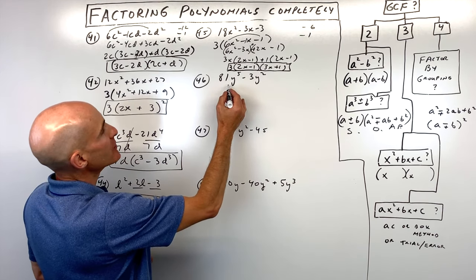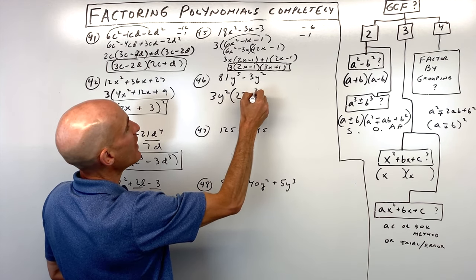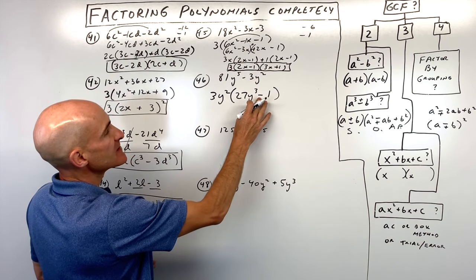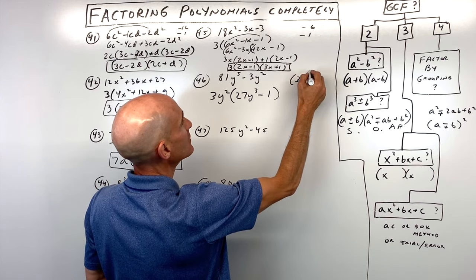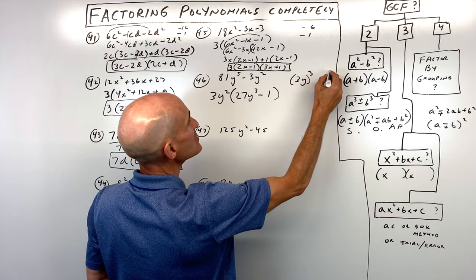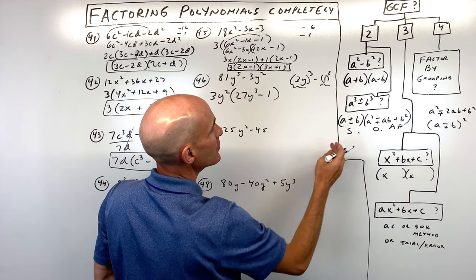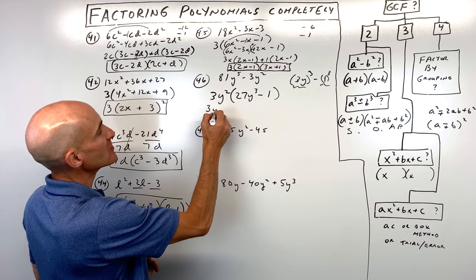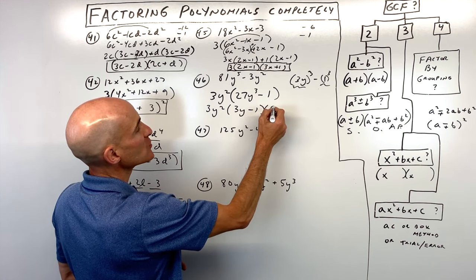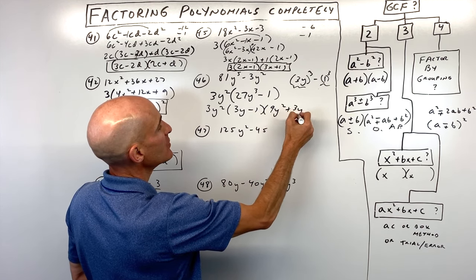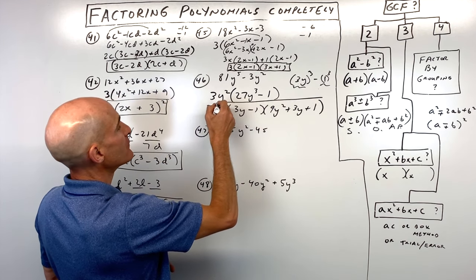Number forty-six: factor out a greatest common factor of 3y squared, giving 3y squared times 27y cubed minus 1. This is a difference of two cubes since 27y cubed is 3y cubed. Our a value is 3y and b is 1. Using the SOAP formula: 3y minus 1 times 9y squared plus 3y plus 1. Bring down the 3y squared for the fully factored form.